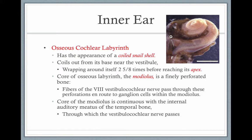The cochlear labyrinth has the appearance of a coiled snail shell. It coils from the base near the vestibule, wrapping around itself two and five-eighths times where it reaches the apex, or the top. The core is the modiolus, which is the finely perforated bone. Fibers of the eighth vestibulocochlear nerve pass through these perforations en route to the ganglion cells within the modiolus. The core of the modiolus is continuous with the internal auditory meatus of the temporal bone, through which the vestibulocochlear nerve passes.